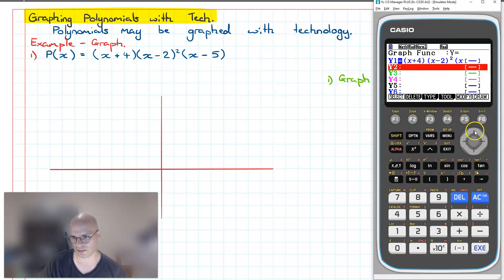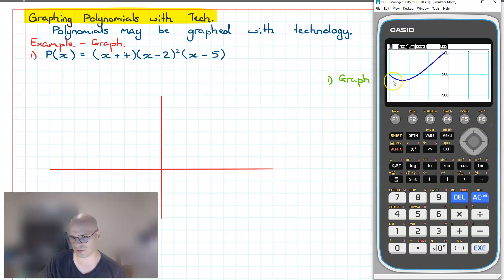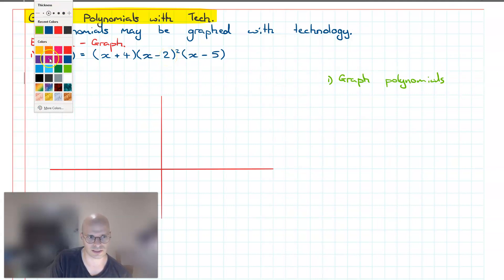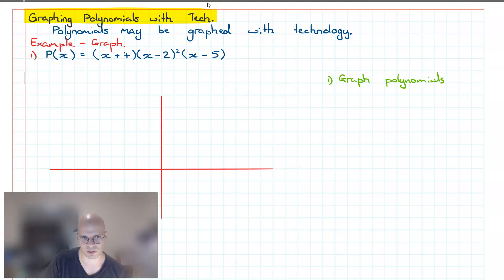Once I've got it entered, the next step is to graph it. I press F6 on the calculator and it shows me the graphical representation of this polynomial. One thing you might notice is that we can't get a really good look at it because it's not in focus. We need to set the horizontal span so we can see all of our X intercepts. To know how to set this, I need a reasonable understanding of this function.